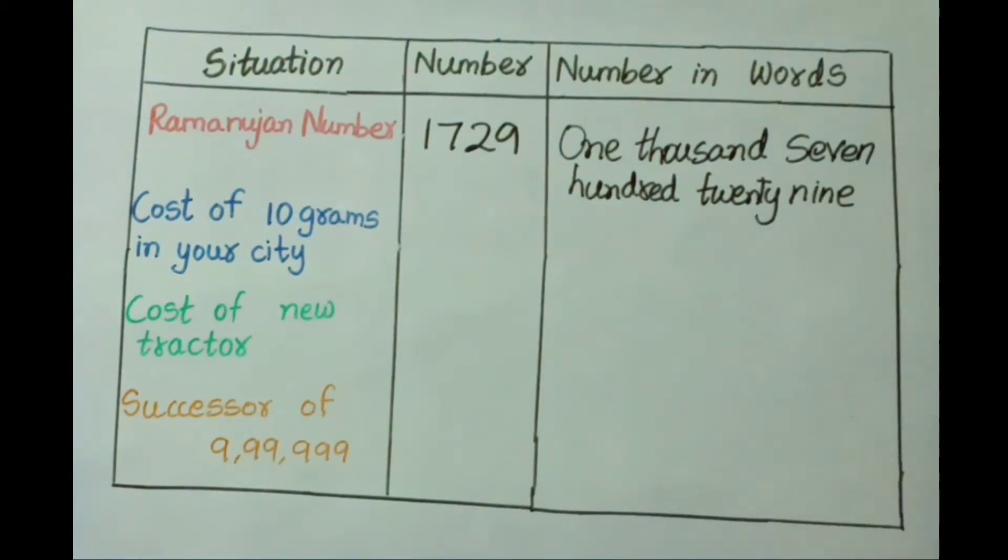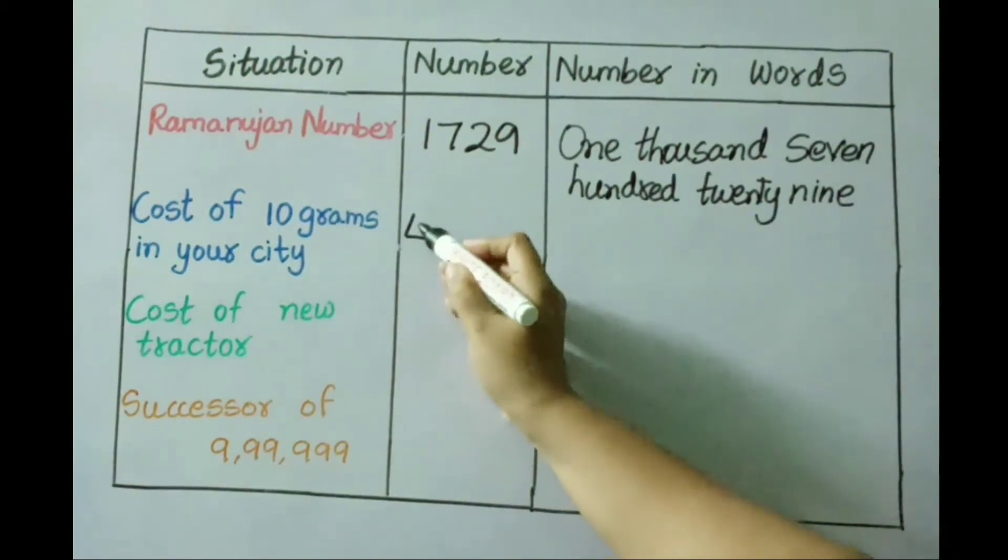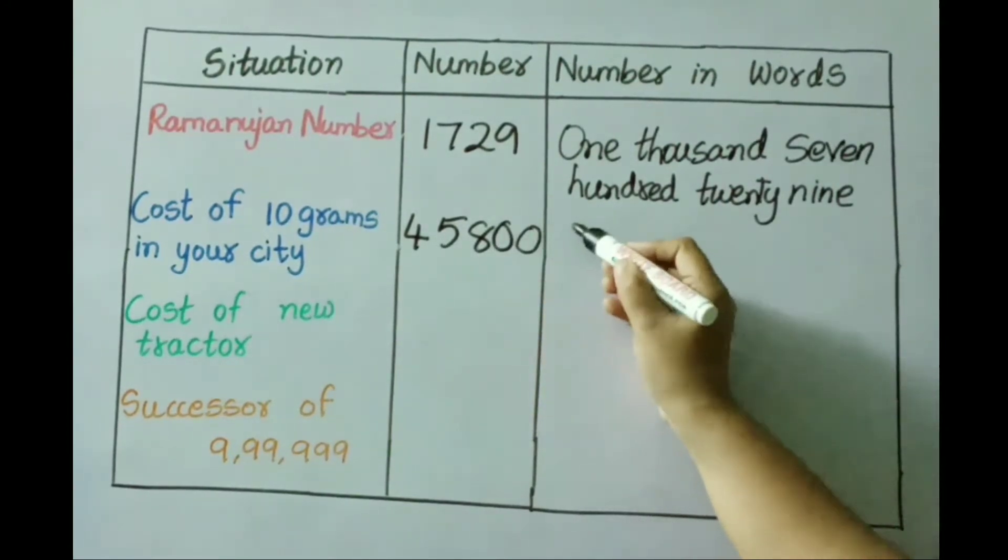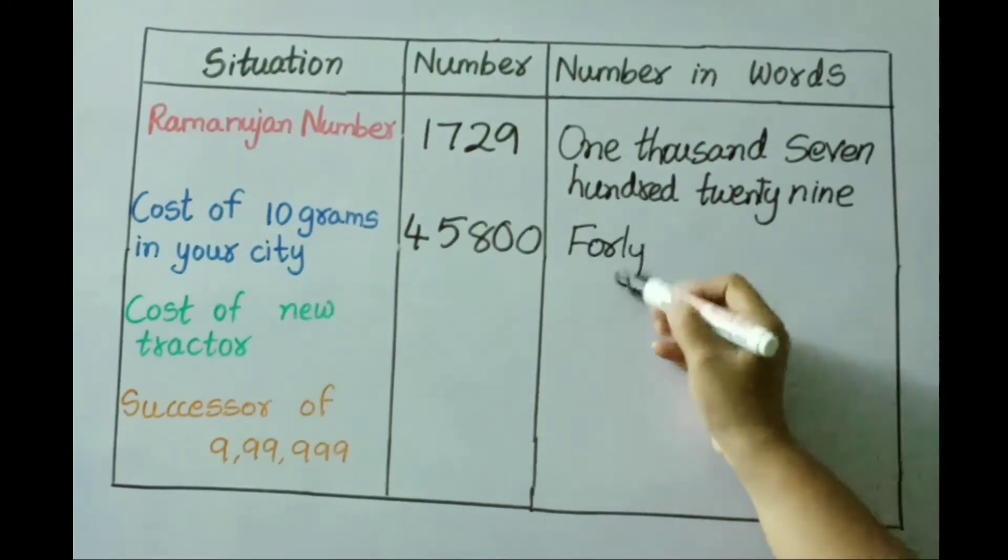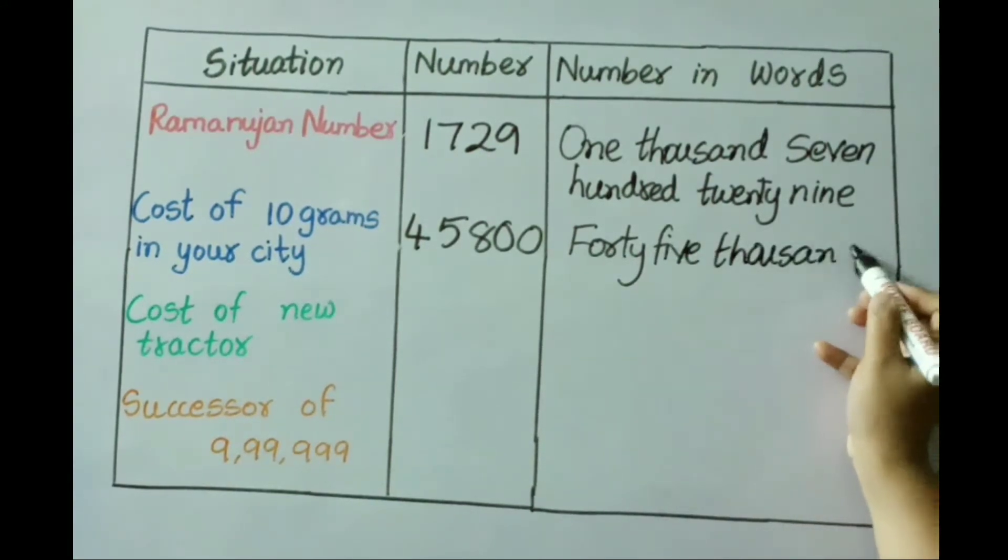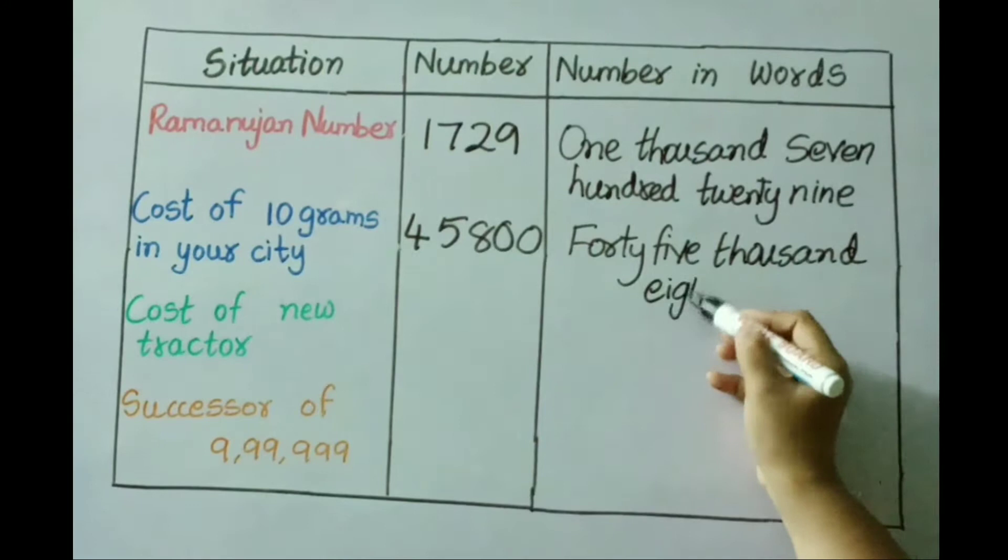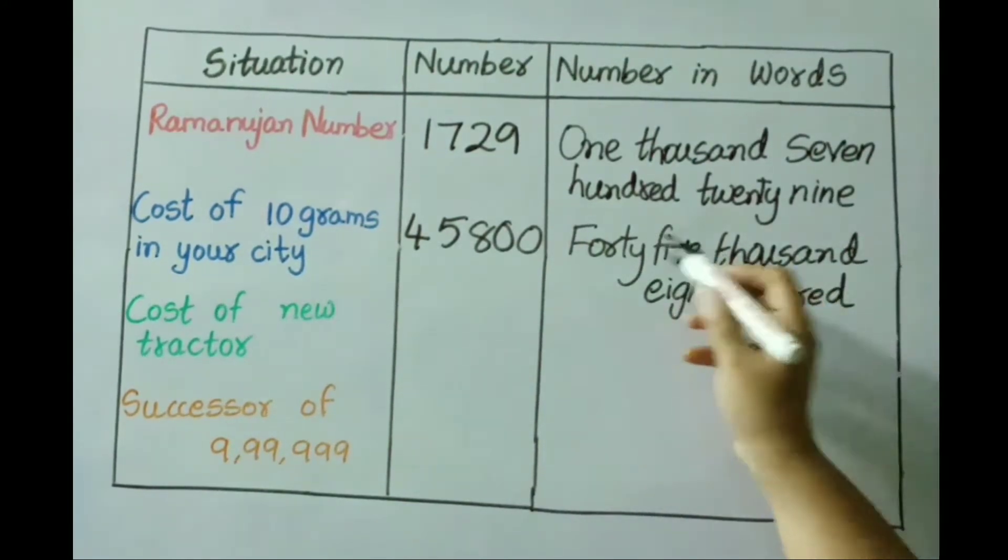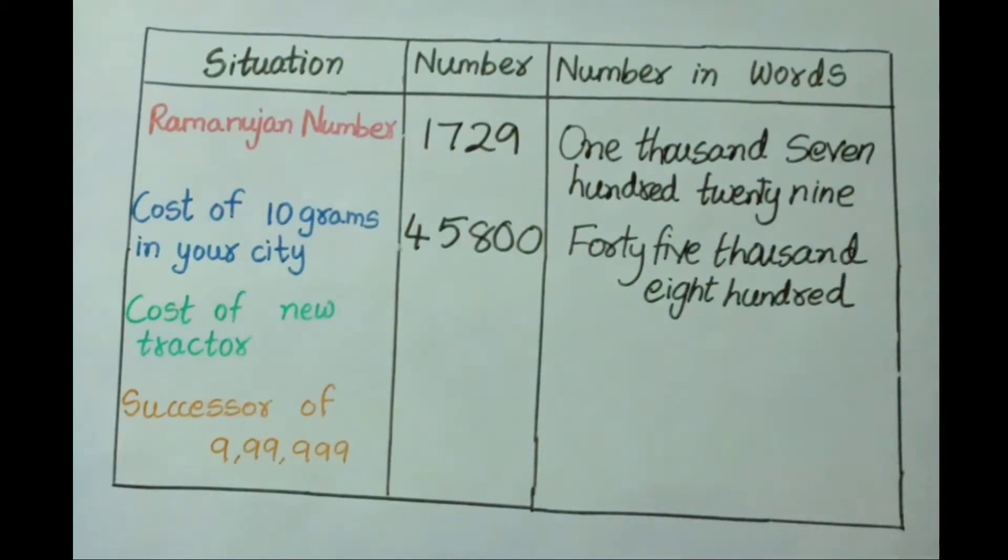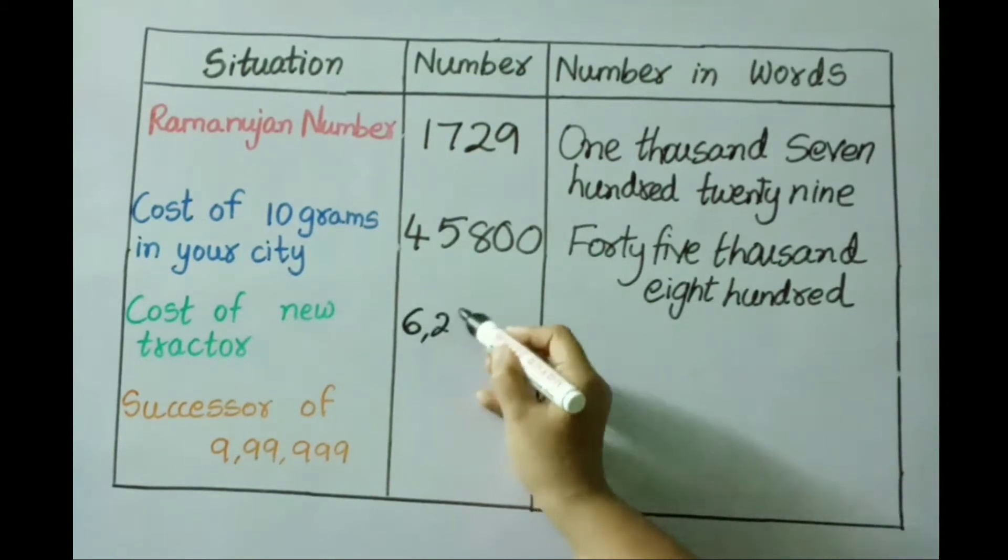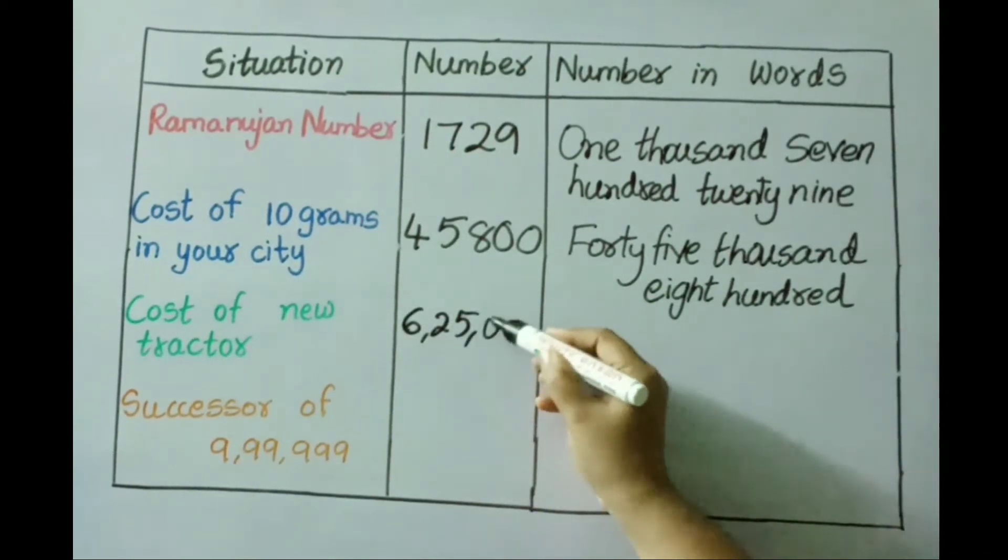See next one: cost of ten grams in your city, it is approximate value forty-five thousand eight hundred.